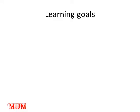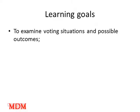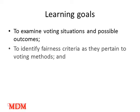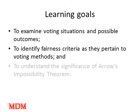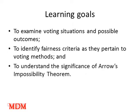The learning goals for this lesson are for you to examine voting situations and possible outcomes, to identify fairness criteria as they pertain to voting methods, and to understand the significance of Arrow's impossibility theorem.